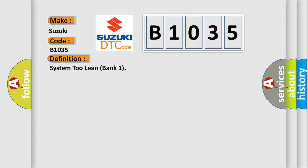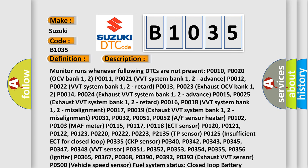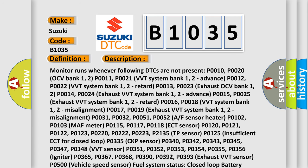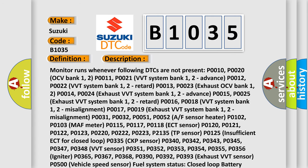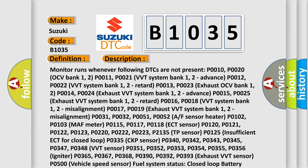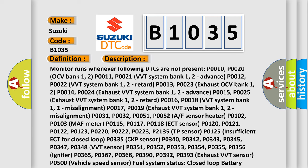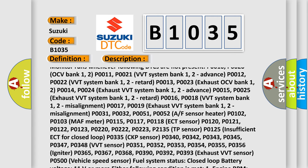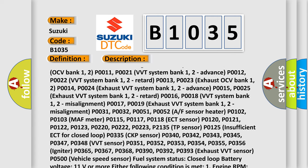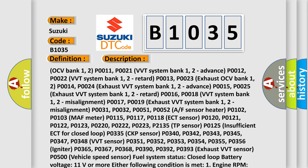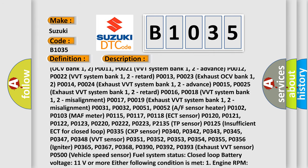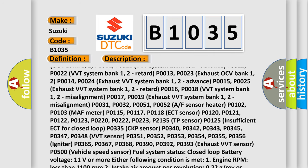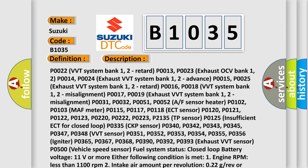The basic definition is System 2 Lean Bank 1. Monitor runs whenever the following DTCs are not present: P0010, P0020 OCV Bank 1 and 2; P0011, P0021 VVT System Bank 1 and 2 Advance; P0012, P0022 VVT System Bank 1 and 2 Retard; P0013, P0023 Exhaust OCV Bank 1 and 2; P0014, P0024 Exhaust VVT System Bank 1 and 2 Advance; P0015, P0025 Exhaust VVT System Bank 1 and 2 Retard; P0016, P0018 VVT System Bank 1 and 2 Misalignment.